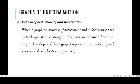You can also plot a graph of velocity or speed against time. The slope of a distance-time graph is going to be uniform speed. The slope of a displacement-time graph is going to be velocity, while the slope of a velocity or speed-time graph is going to be uniform acceleration.